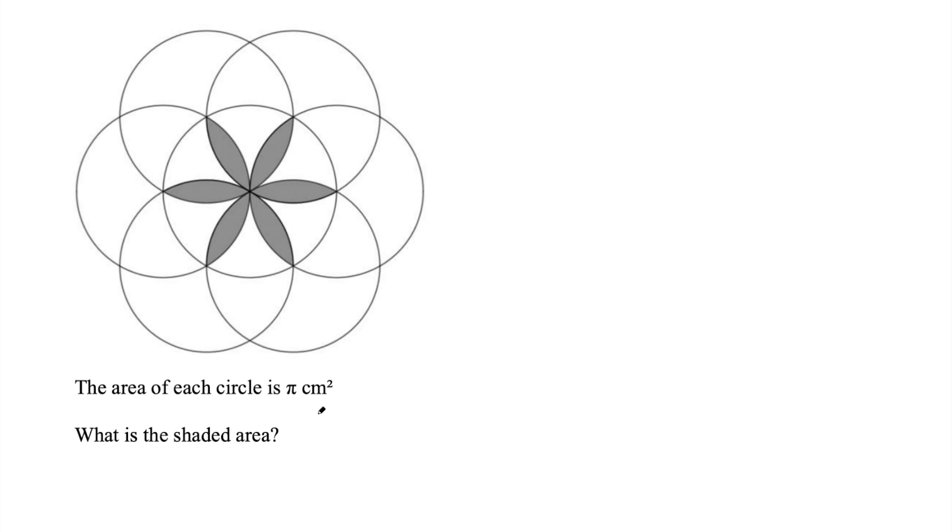This question says the area of each circle is π centimeters squared. What is the shaded area?